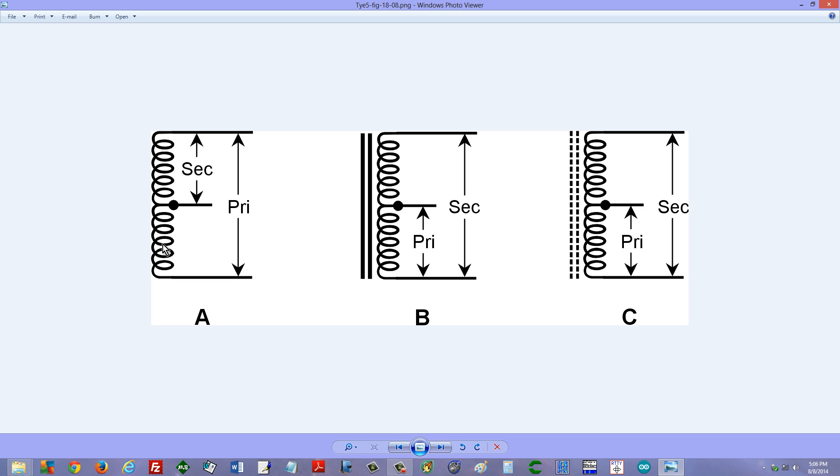This one has an air core, that one has a laminated or solid iron core, and that one has a powdered iron core. You can notice that just a single winding comprises the entire transformer, so there will be no isolation between the primary and secondary with respect to direct current.